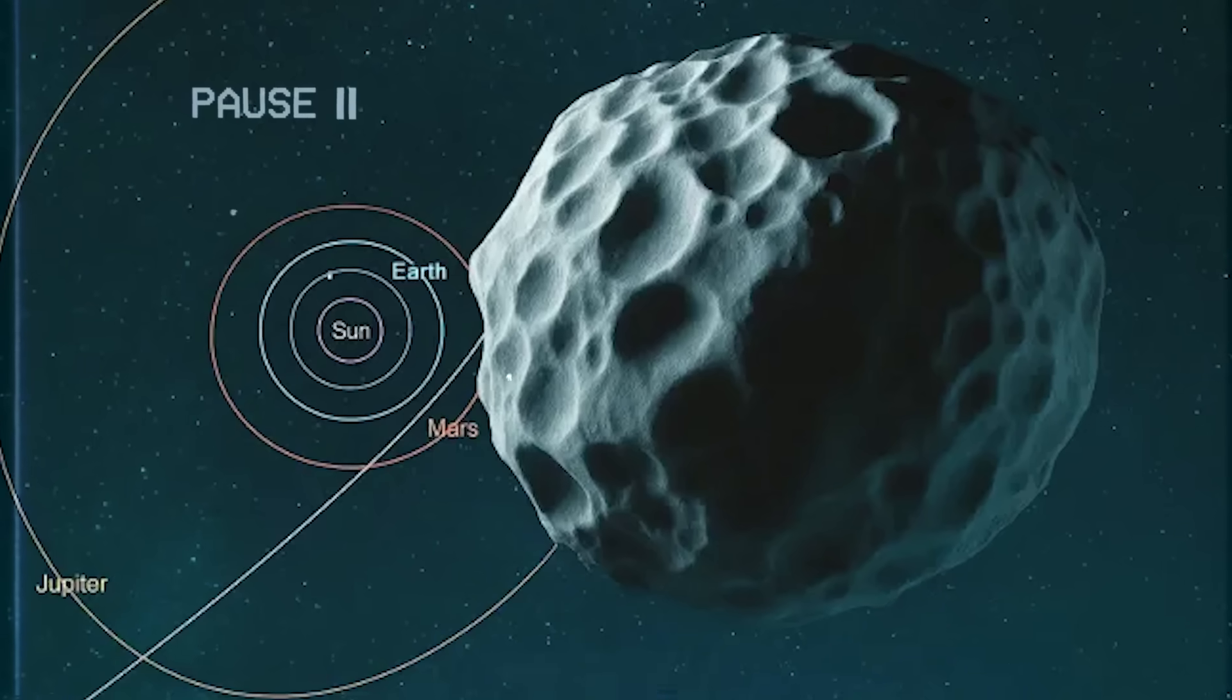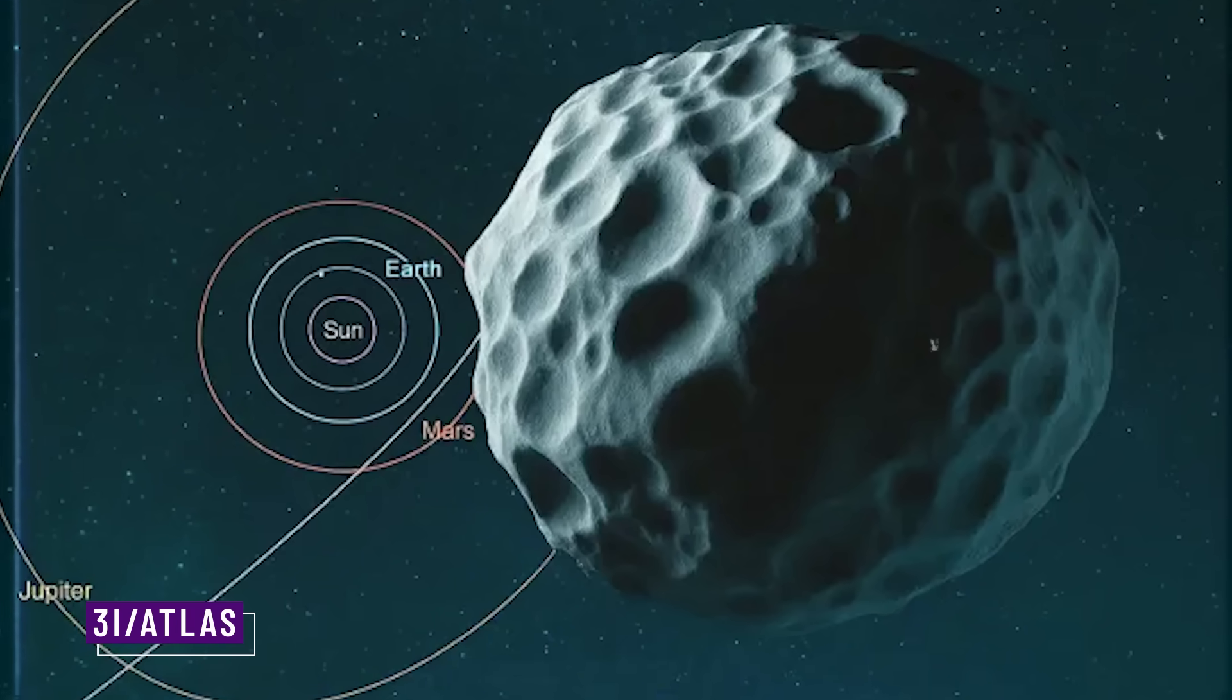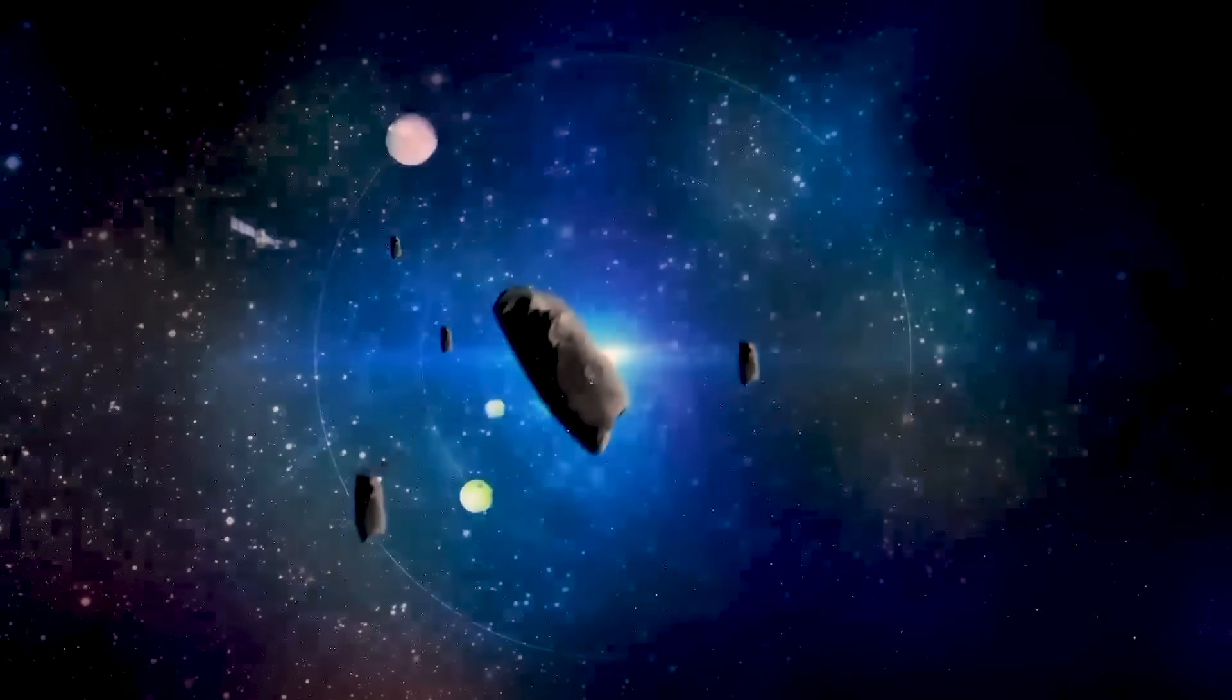And now, a new visitor from deep space, 3i/ATLAS, is racing through our solar system. It's not just massive, it's fast, unpredictable, and eerily familiar.